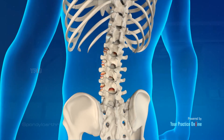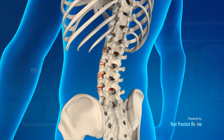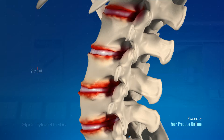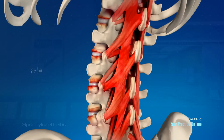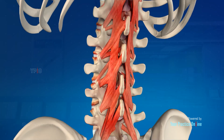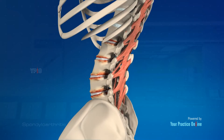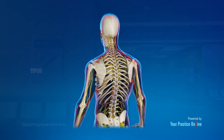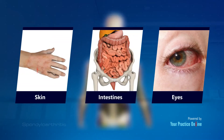Arthritis is an inflammatory condition of the joints. Spondyloarthritis is a type of arthritis in which the entheses, the connective tissue between the tendons or ligaments and bone, are affected as well. Spondyloarthritis mainly affects the spine, but can also involve other joints and may be associated with other conditions that affect the skin, intestines, and eyes.